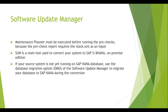Finally, the Software Update Manager is the tool used to actually perform the conversion from ECC to SAP S4 HANA. Before running it, you must complete Maintenance Planner, Pre-Check Reports, and Custom Code Analyzer. If your system is not yet on SAP HANA database, you can use the DMO — Database Migration Option — within the Software Update Manager. This option not only converts your application to SAP S4 HANA but also migrates your database from a traditional database to SAP HANA database in a single step.